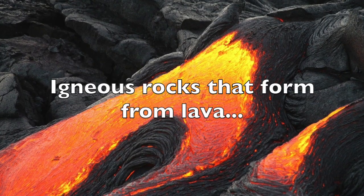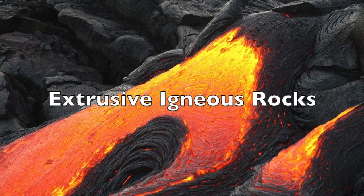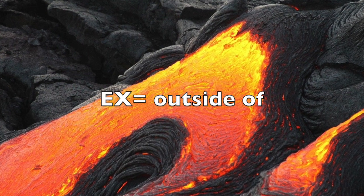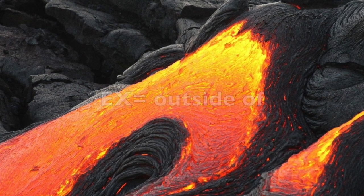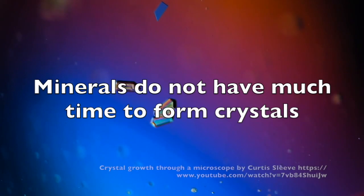Igneous rocks that form from lava are called extrusive rocks. "Ex" means outside of — remember the word "exit," which means to go out. When extrusive rocks form, the lava cools very quickly. It cools so quickly that the minerals in the rocks don't have time to form large crystals. Some extrusive rocks have very tiny crystals, and some have barely any crystals at all.